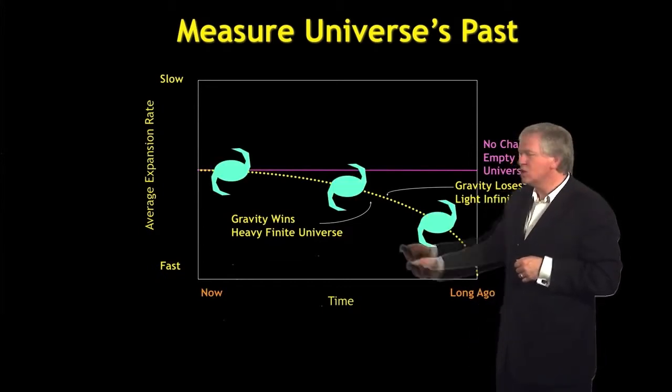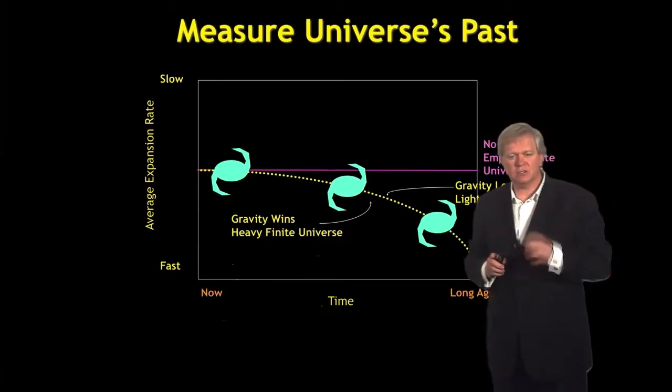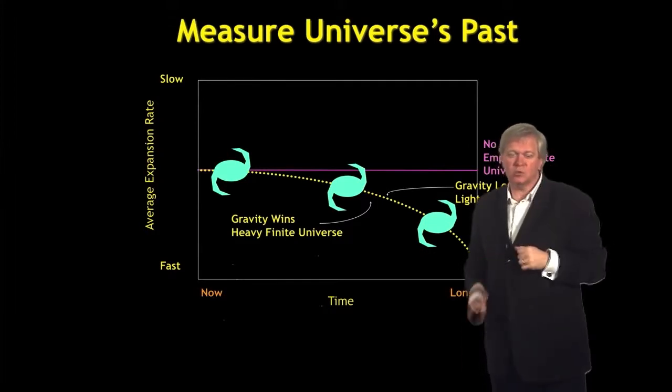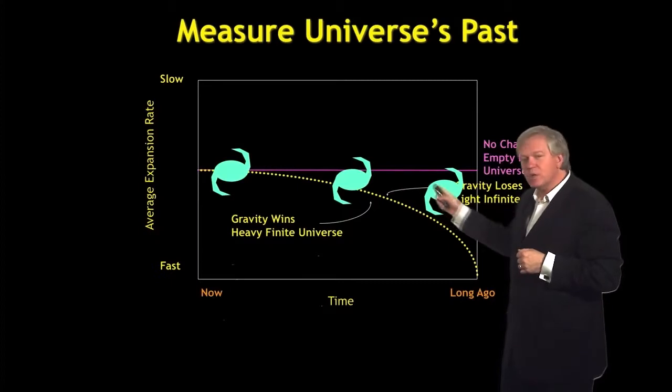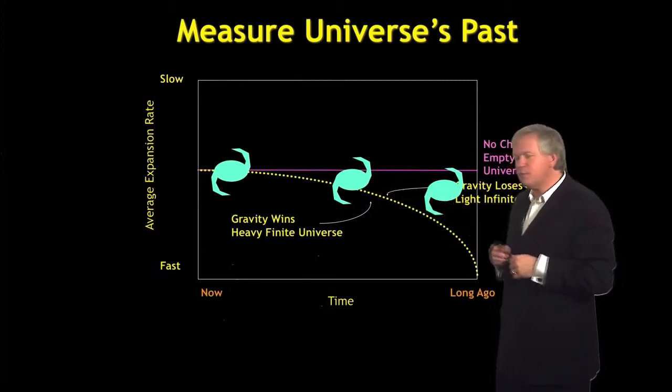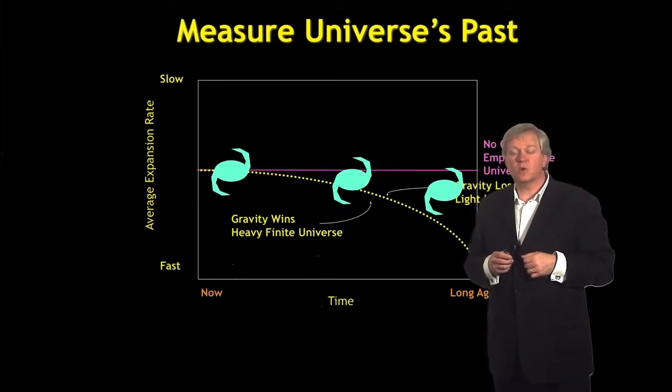So imagine when I look back in time, my galaxies lie exactly on that line. Then I know the universe is right on that edge where we're not sure what its ultimate future is. On the other hand, if the universe is slowing down slower, the galaxies lie in this part of the diagram, then we know that the universe is going to exist forever.